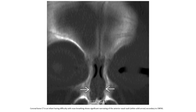Coronal bone CT in an infant having difficulty with nosebleeding shows significant narrowing of the anterior nasal airway secondary to congenital nasal pyriform aperture stenosis.